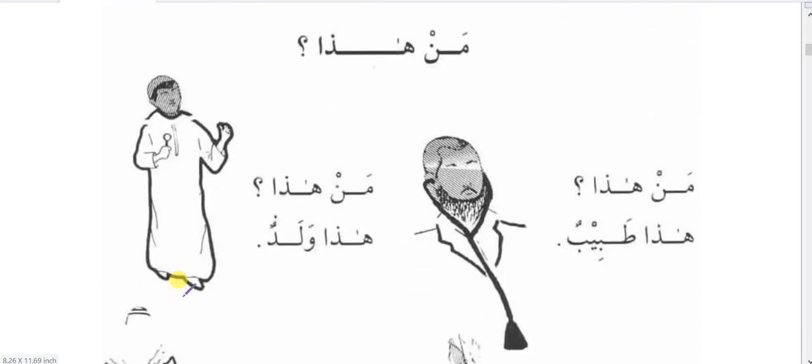Exercise three, iqra waktub — read and write. Haza maktabun — this is a table; haza masjidun — this is a masjid; haza qalamun — this is a pen; haza sarirun — this is a bed. Maa haza — haza kursiyun, this is a chair. A haza baitun — is this a house? Laa, no — haza masjidun. Maa haza — haza miftahun, this is a key.